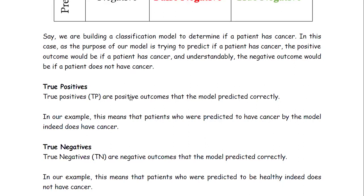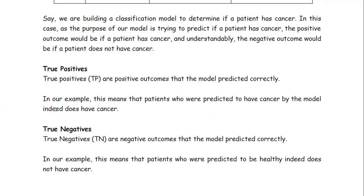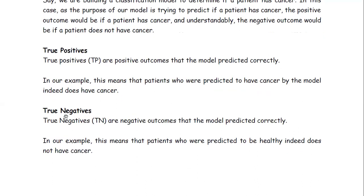True positives (TP) are the positive outcomes that the model predicted correctly. This means the patients who are predicted to have cancer by the model indeed do have cancer. For example, suppose our machine predicts that 5 patients have cancer, and those patients actually do have cancer — that is true positive.